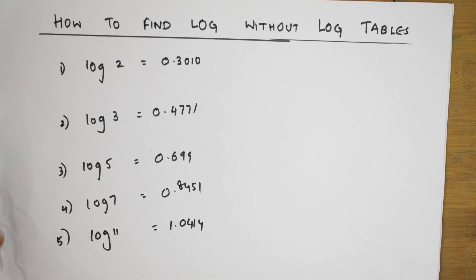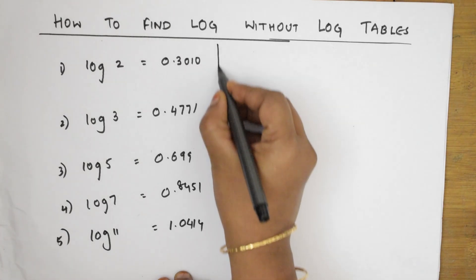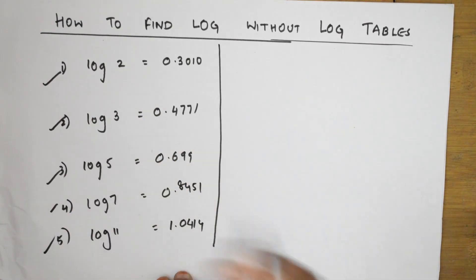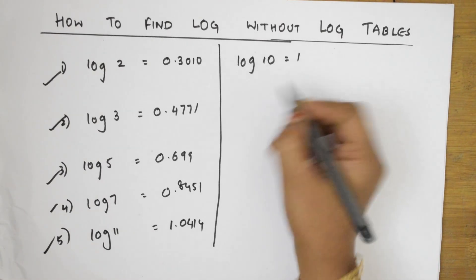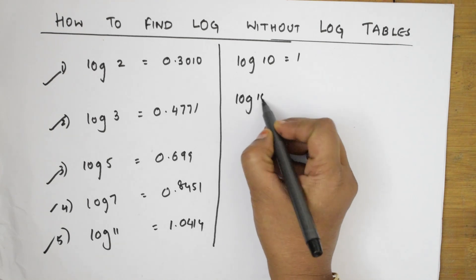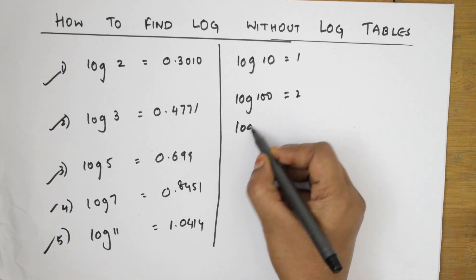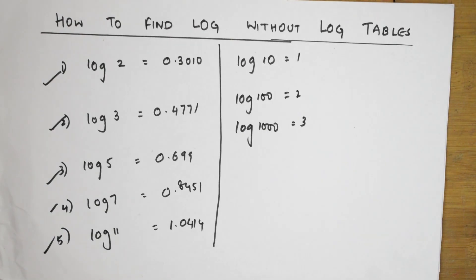One more basic thing to remember: log 10 = 1, log 100 = 2, log 1000 = 3. With these basics in place, let me now start with how to solve in the exam.